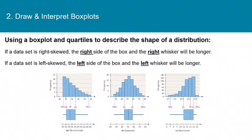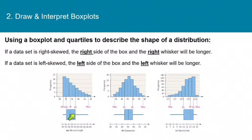You can get an idea of the shape of a distribution by looking at the box plot. If a data set is right skewed, the right side of the box and the right whisker will be longer. If the data is left skewed, the left side of the box and the left whisker will be longer. With a symmetrical data set, the median will be close to the center of the box and the whiskers will be about the same length.